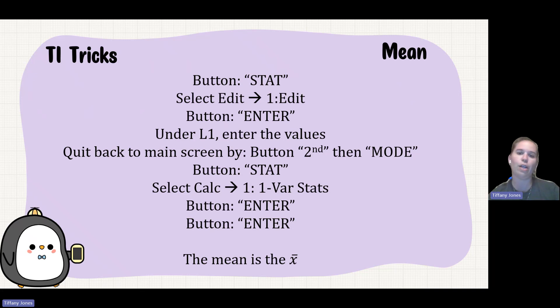In the first L1, you're going to put all the values in there. You then quit out. Then you'll press the second, then your mode. You'll press stat, then you'll press your calc number 1, which is your one variable statistics. Then you'll press the enter button twice, and then it's going to give you X bar, which would be your mean.